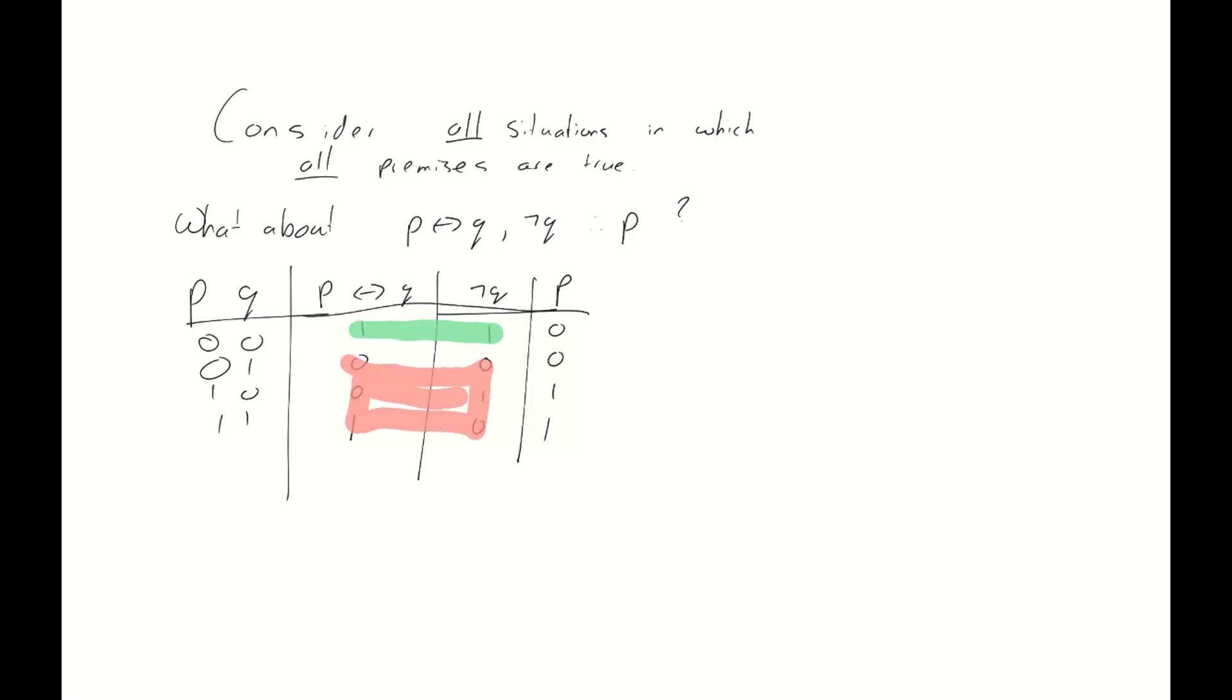In the top row, we see that both of the premises are true, but the conclusion is false, which means that in this case, the argument is indeed not logically valid. Furthermore, this method has immediately given us a counterexample. Remember that when we're proving that a certain argument is not valid, we can only do so by giving a counterexample. In this case, our counterexample is when both p and q are false.